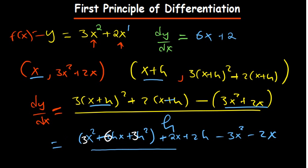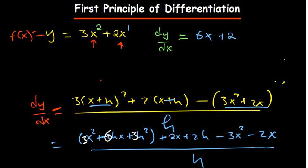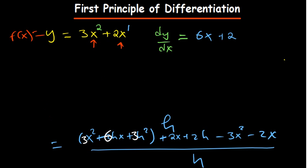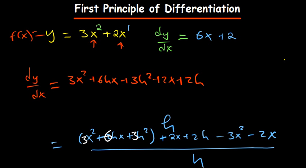Okay, so with that understanding we're able to simplify this. So our dy/dx is equal to, we have 3x squared for the first part plus 6hx plus 3h squared, and then we have plus 2x plus 2h, and then what we are subtracting is minus 3x squared and then minus 2x. So that is able to cancel out with that.